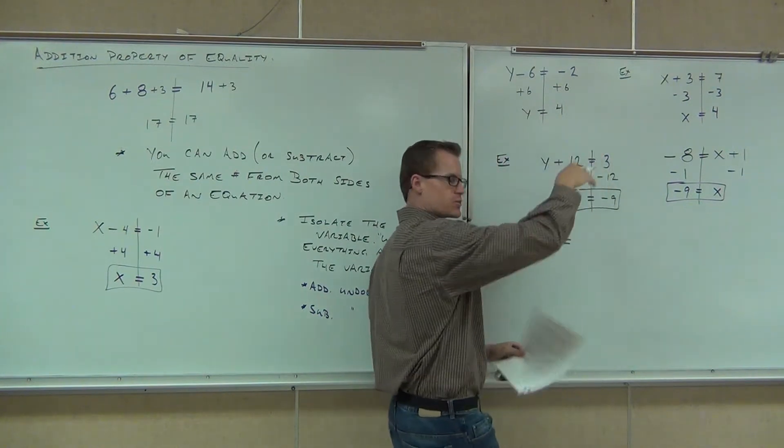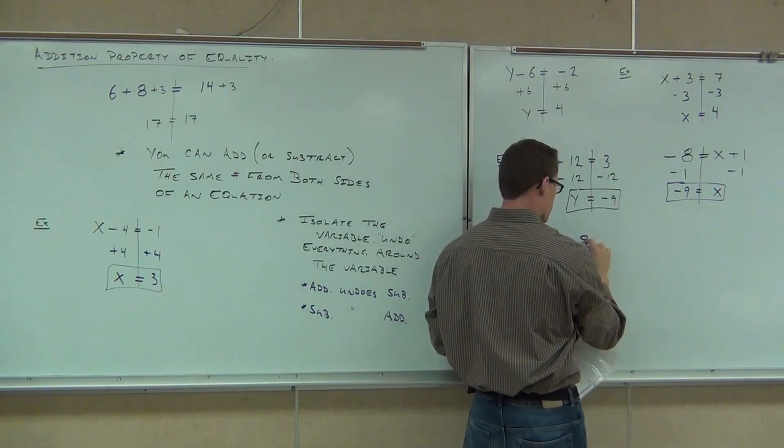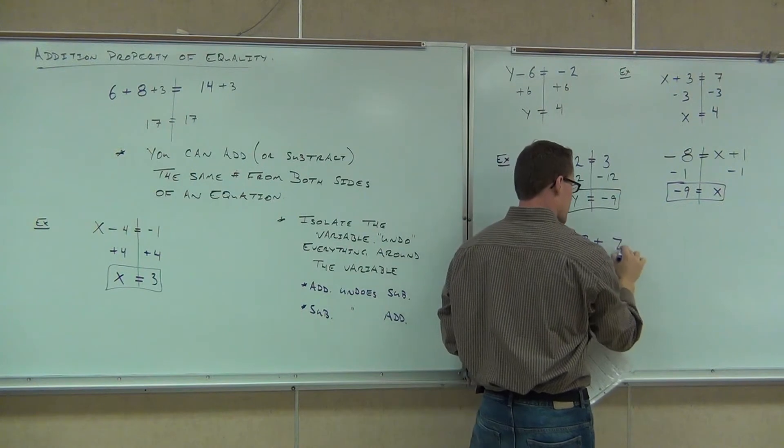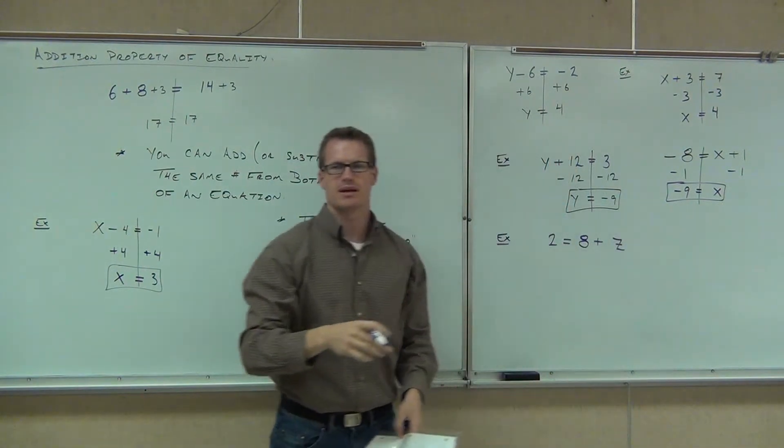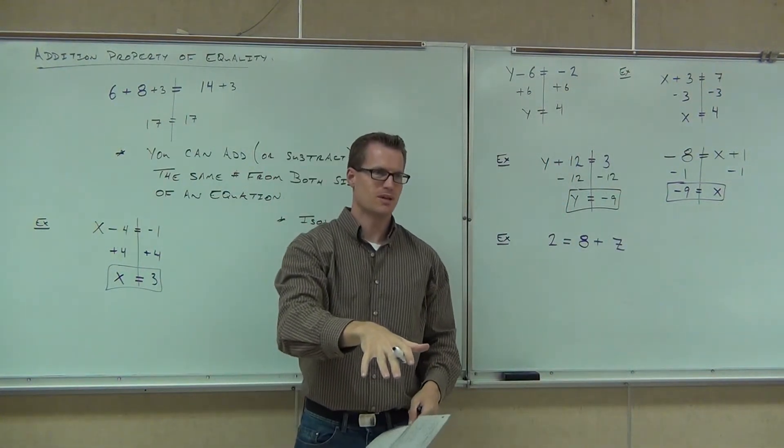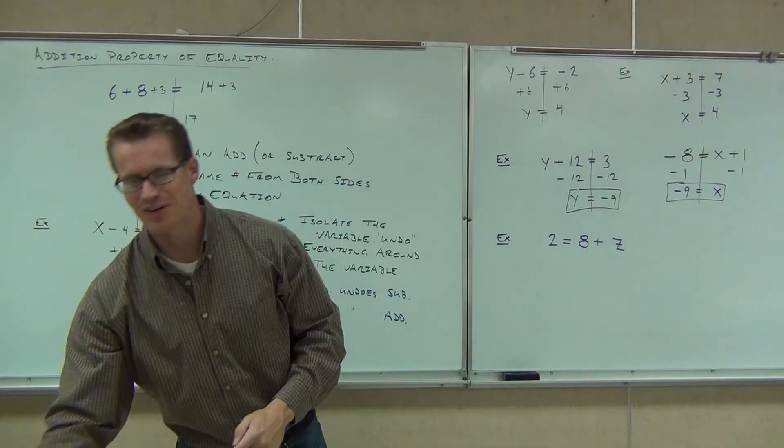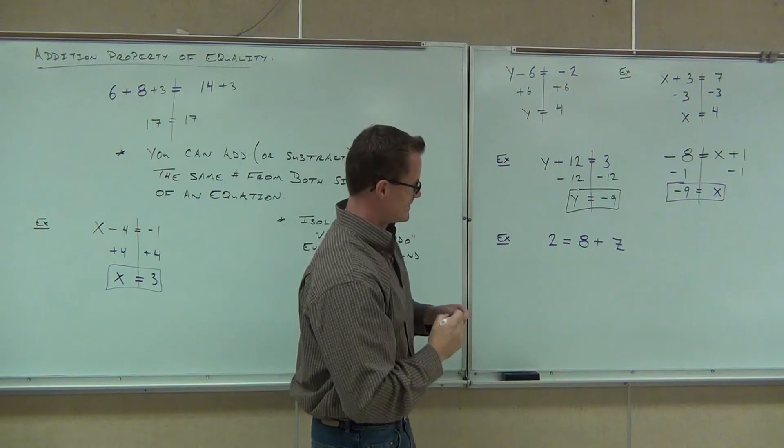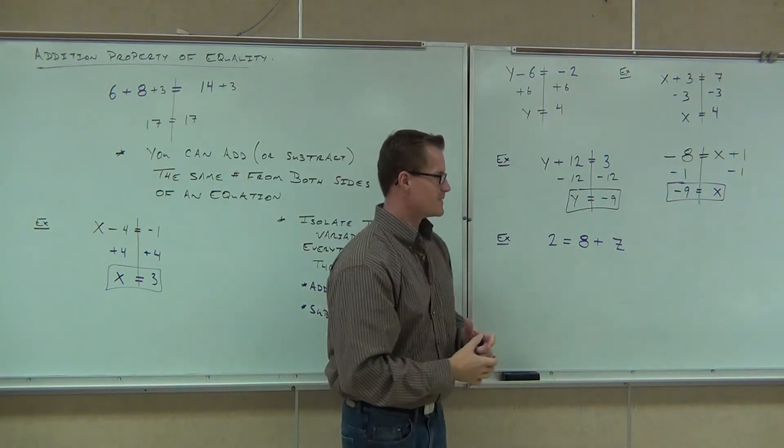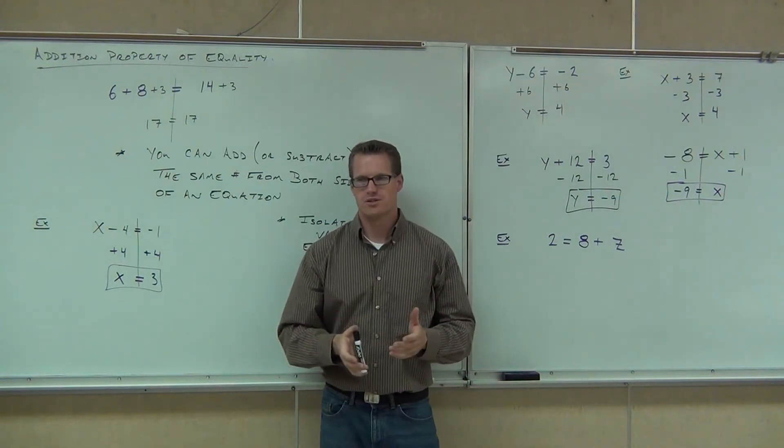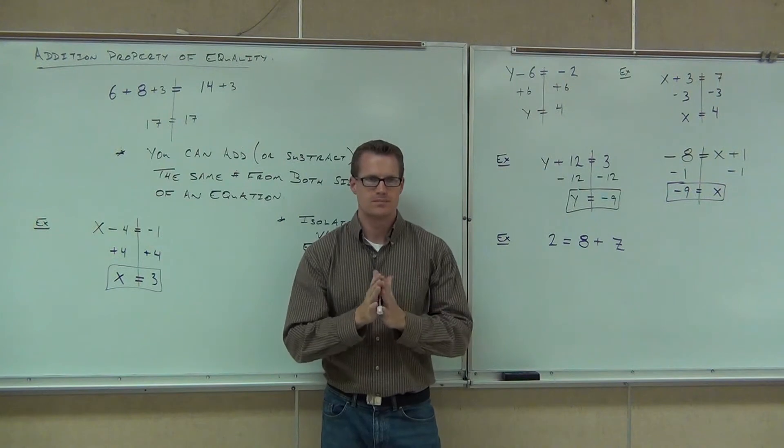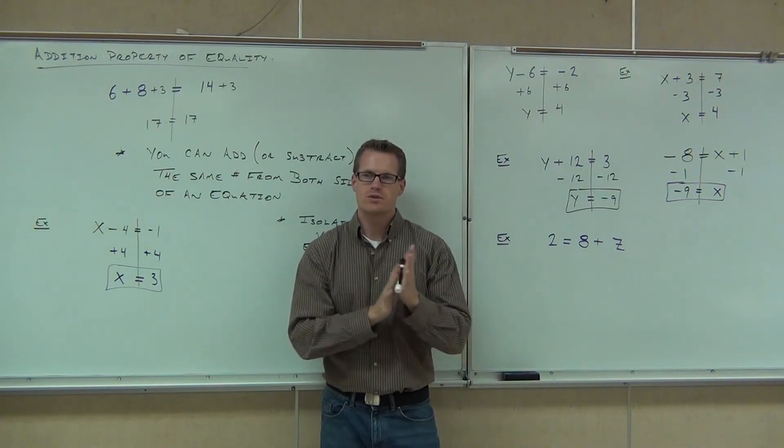A lot of people are just fine on these ones. I do want to show you a couple more that sometimes get people a little confused. I said little people. They're just fine on this. Two equals eight plus Z. It's still an equation. What's our variable here? Z. People get a little confused on what to do here.